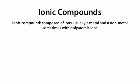We're going to talk about ionic compounds. Ionic compounds are composed of ions, usually a metal and a non-metal ion. Sometimes these ions can be combined with polyatomic ions. So we could have a metal and a non-metal ion, a metal and a polyatomic ion, a non-metal ion and a polyatomic ion, or just polyatomic ions combined.